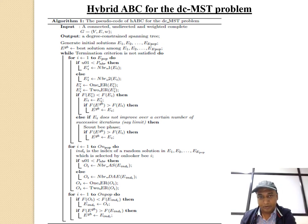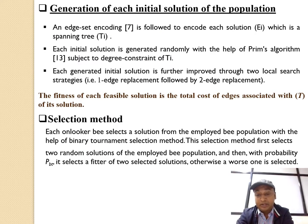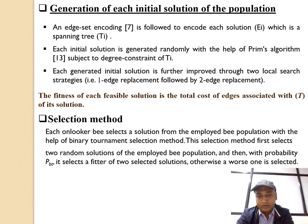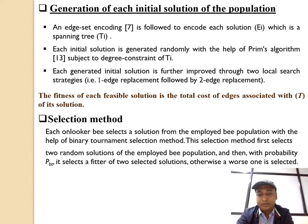This is the pseudocode of our proposed approach for the Degree Constrained Minimum Spanning Tree problem. I will go through the components of our proposed approach one by one. To generate an initial solution, we have followed a set encoding to encode each solution, which is a spanning tree. Each initial solution is generated randomly with the help of Prim's algorithm subject to the degree constraint. Each generated initial solution is further improved through two local strategies: one-edge replacement followed by two-edge replacement, which we will discuss later. The fitness of each feasible solution is the total cost of edges associated with the spanning tree.